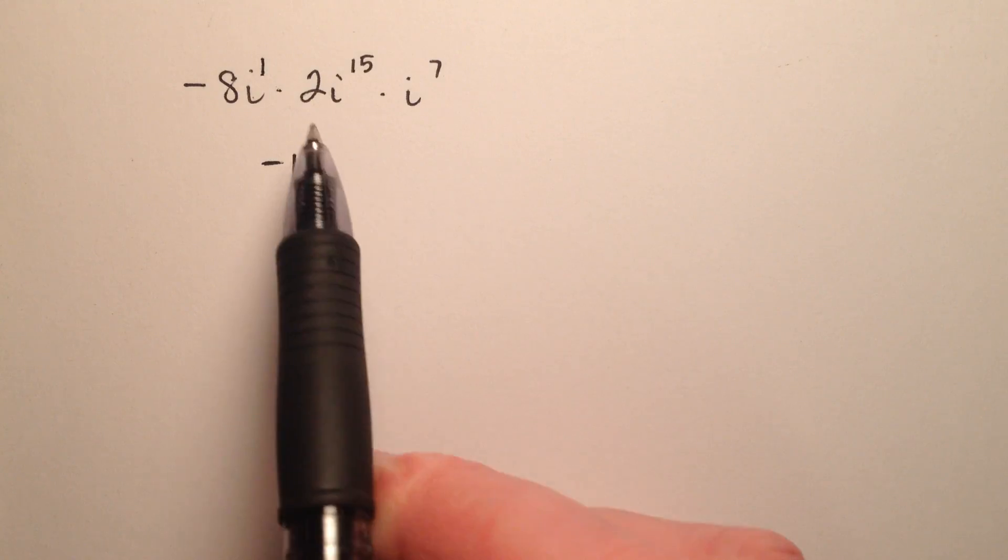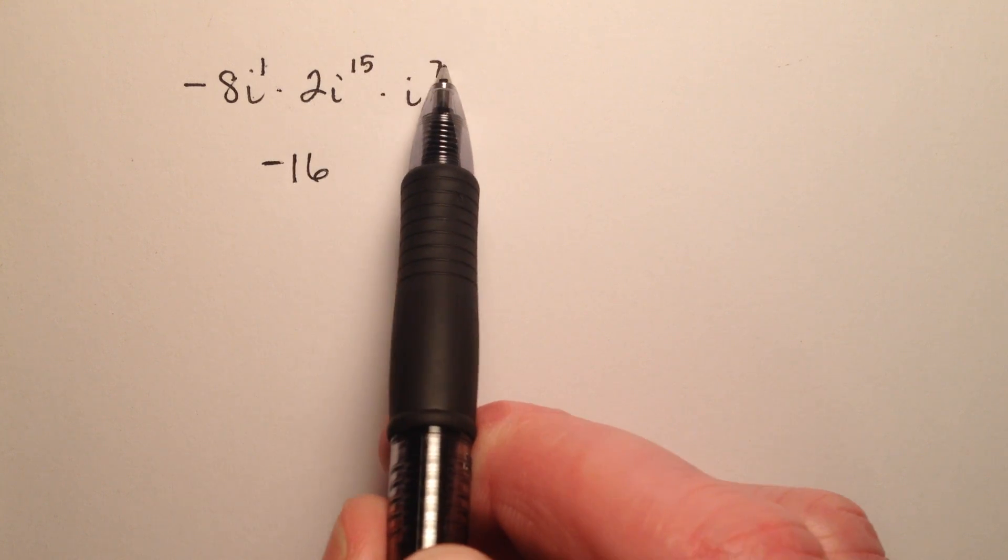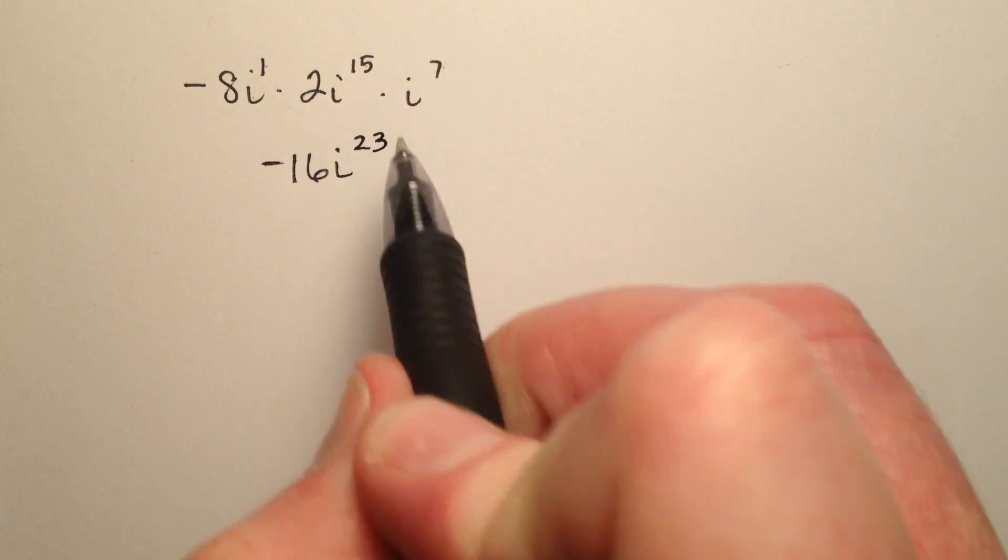The exponent on this i is 1 since it's not written, so I have 1 and 15 which makes 16, and then plus 7 which makes 23, so i to the 23rd.